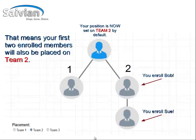Then what you're going to do is come back, and you can see your placement setting would show Team 2 in the profile area — in the bottom right corner of the back office, under profile, under placement, it's going to say Team 2.